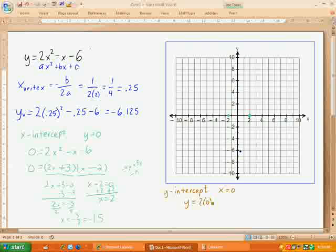So, 2 times 0 squared minus 0 minus 6. And you'll notice that both of those will be 0. So, my y-intercept will be when y equals negative 6. And so, I'll go ahead and put that one down.